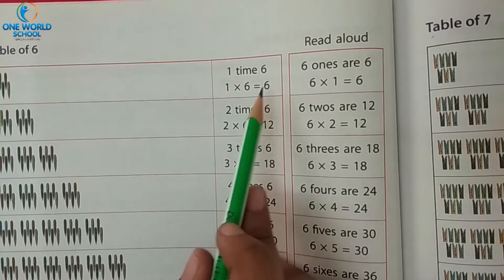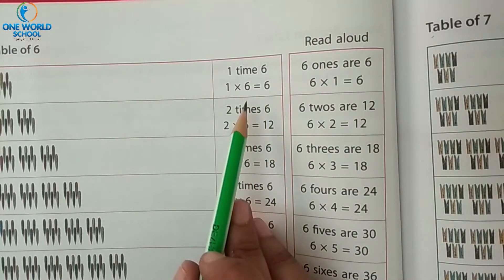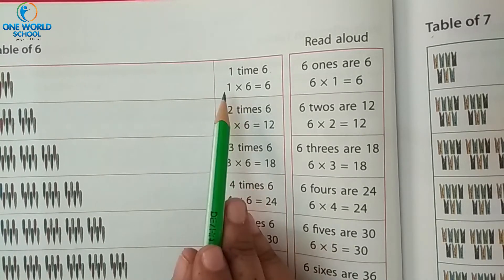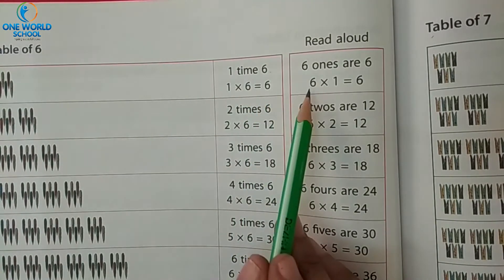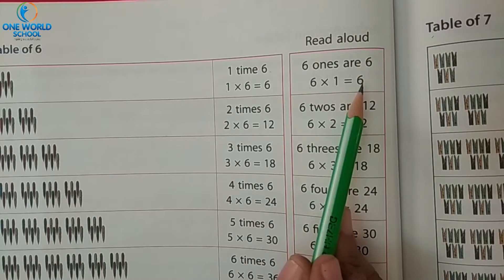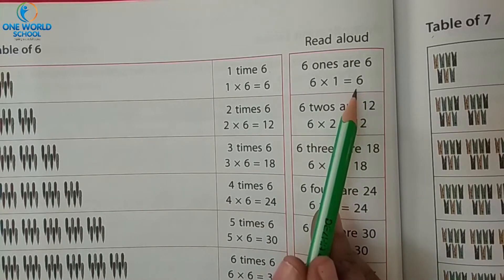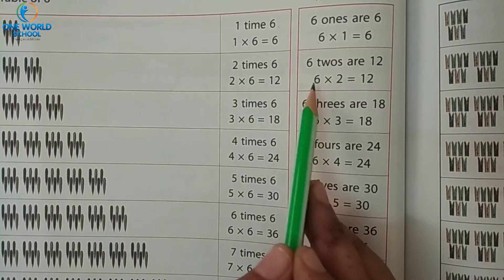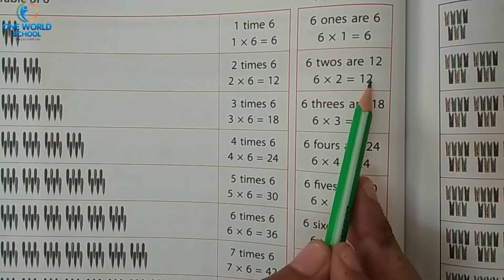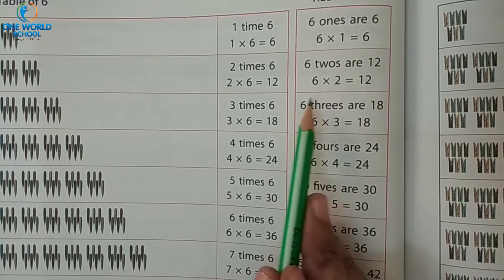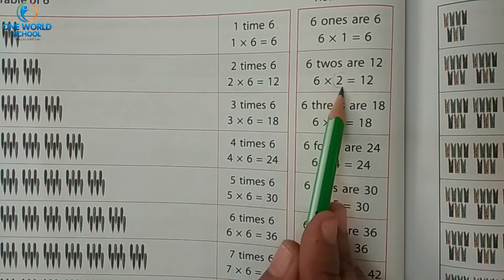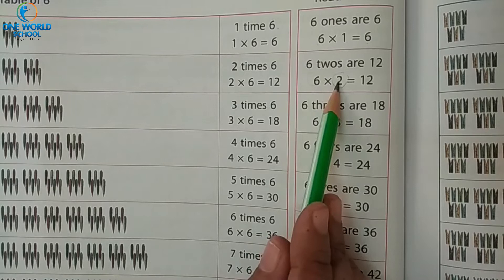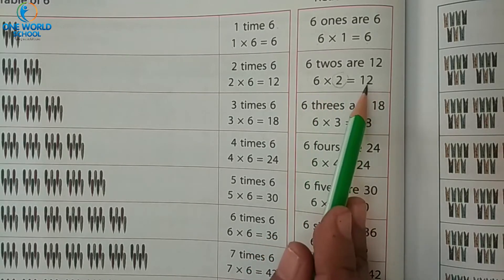Look here. You need to repeat it with me. 1 times 6 — if we multiply 6 by 1, that is 6 ones are 6. Repeat with me: 6 ones are 6. 6 twos are 12. 2 times 6, that is 6 twos are 12.